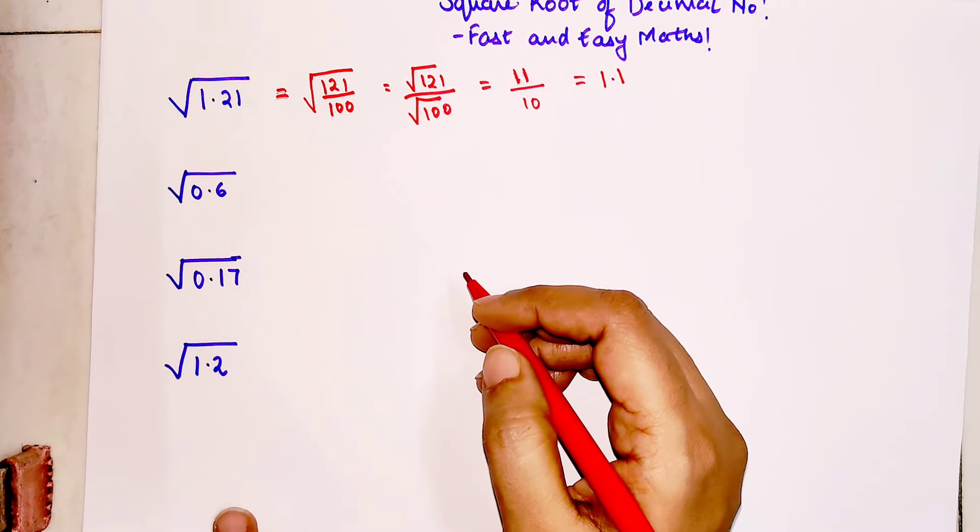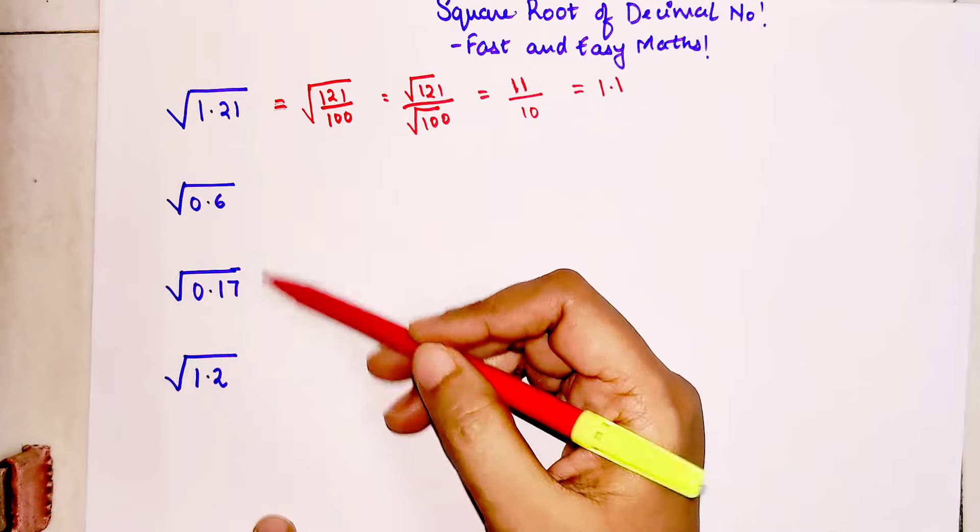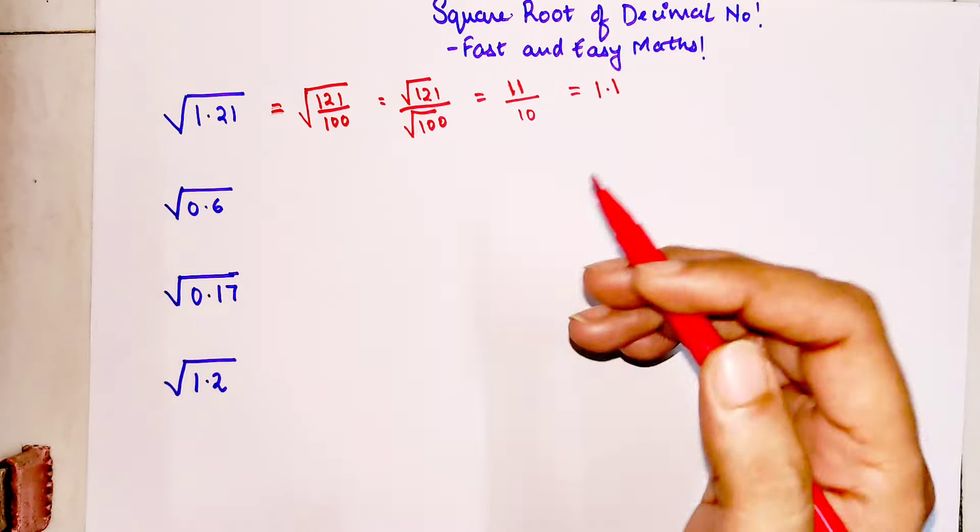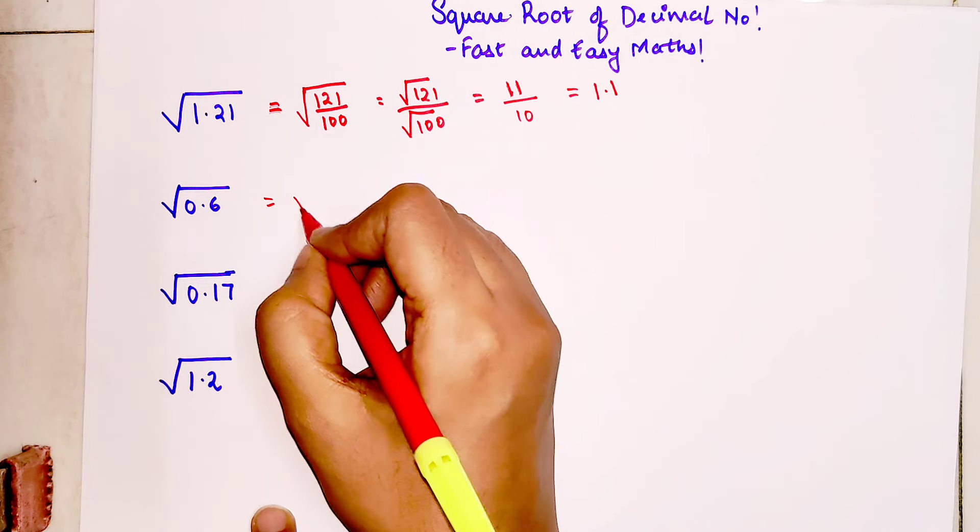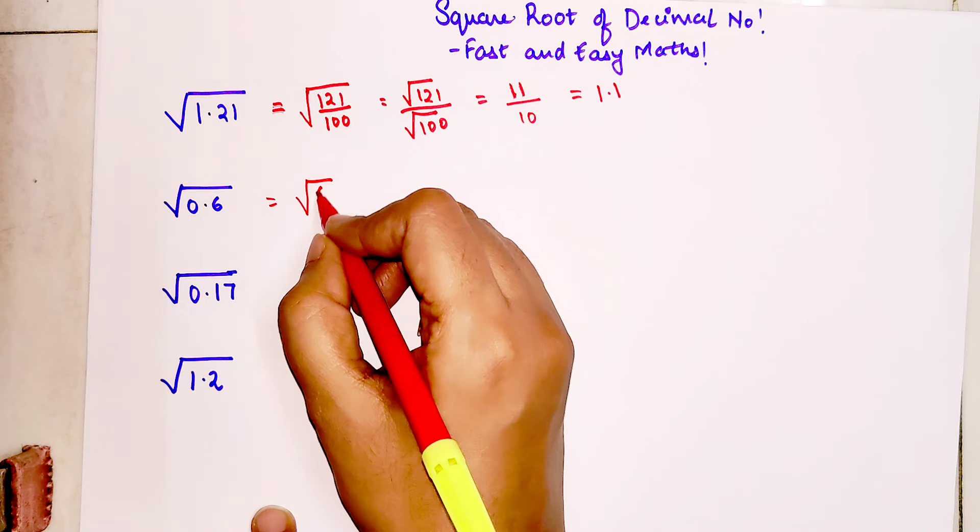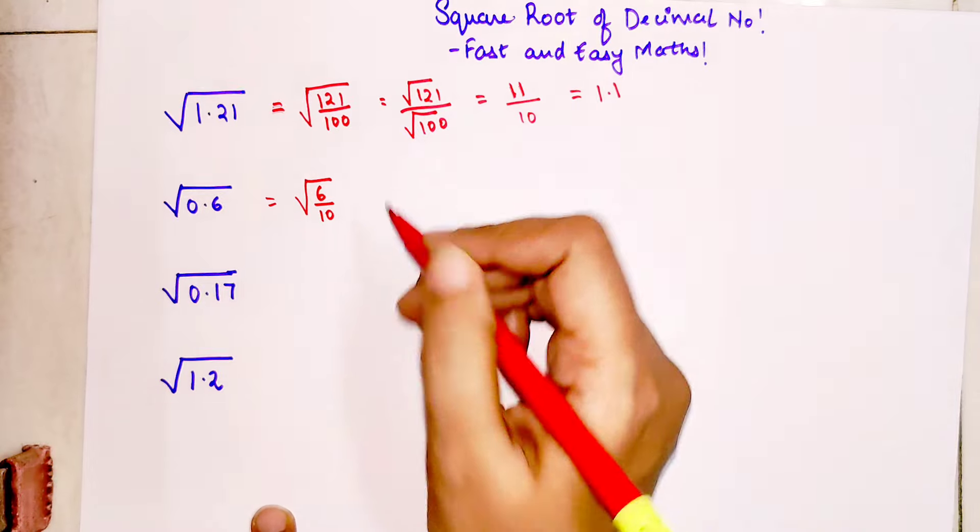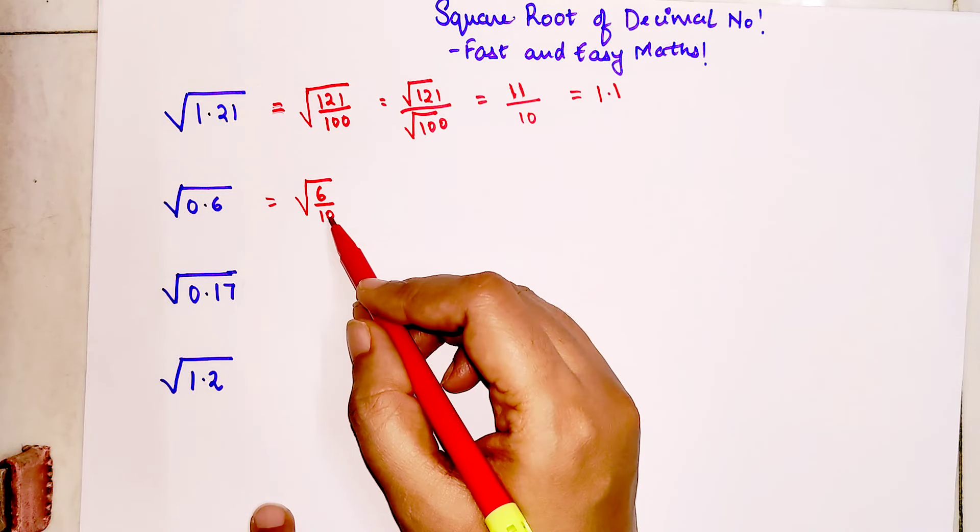Now what happens when the square root which you're supposed to find is not a perfect square? So first thing what you should do is, you'll do the same method. This will be written as 6 upon 10. Please understand we'll make this 100.